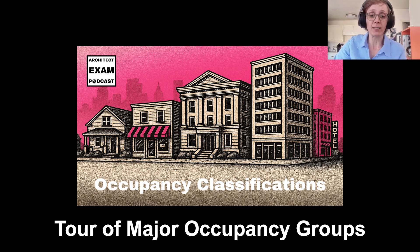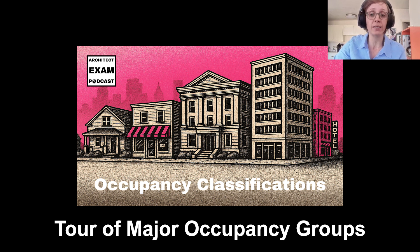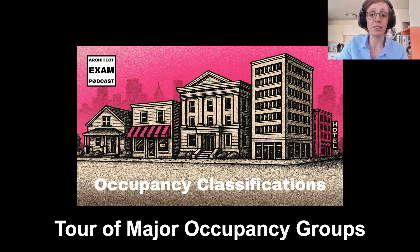Group M is for mercantile. Group M is for places where things are sold — stores, markets, and shopping centers. The key safety concerns include customers who are unfamiliar with exits and high fire loads from merchandise. Picture a busy department store during holiday shopping: lots of people and products, which creates a need for clear exits and often sprinkler systems.